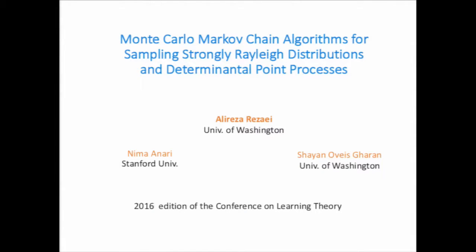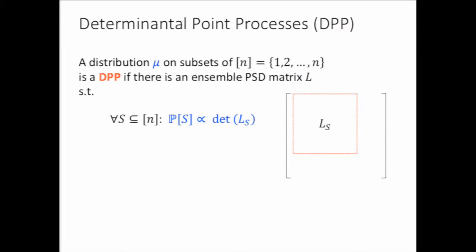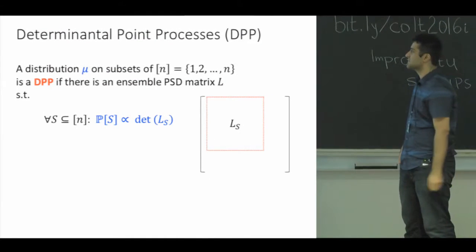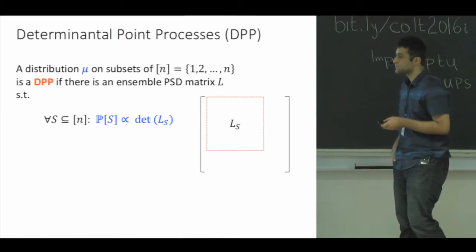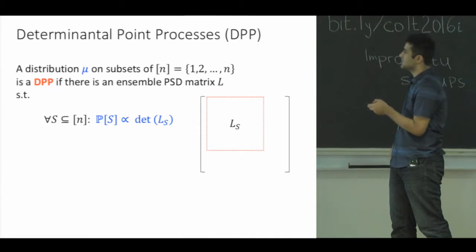Okay, hello everyone. This talk is about fast algorithms for sampling from determinantal point processes. Let me start with the definition of a determinantal point process. A point process is just a distribution over subsets of a set. Here I take the set of numbers 1, 2, up to n as a ground set. We say such a distribution is determinantal if there is an n by n positive semi-definite matrix such that the probability of choosing each subset is proportional to its corresponding sub-determinant.